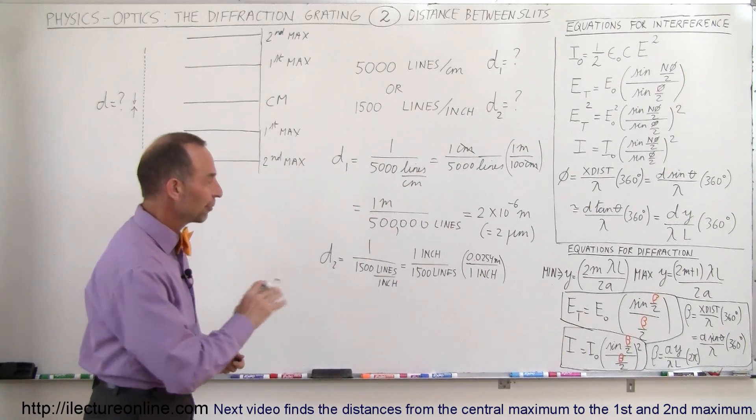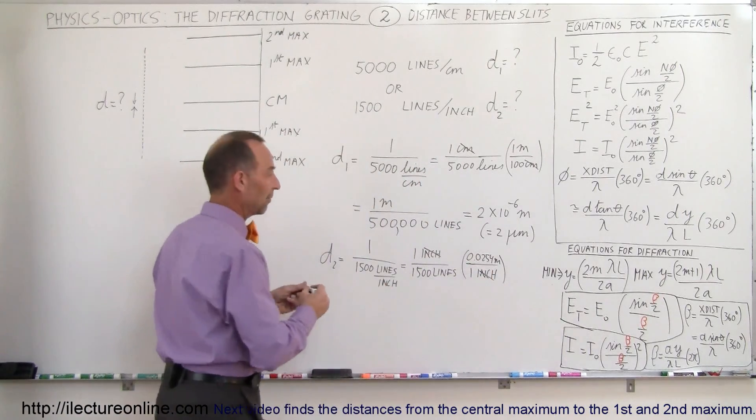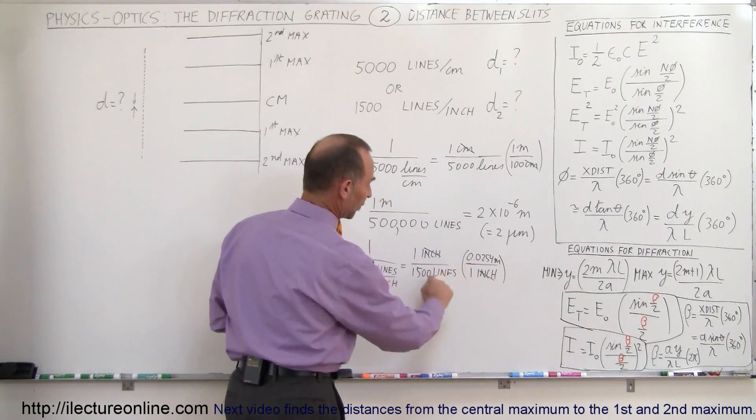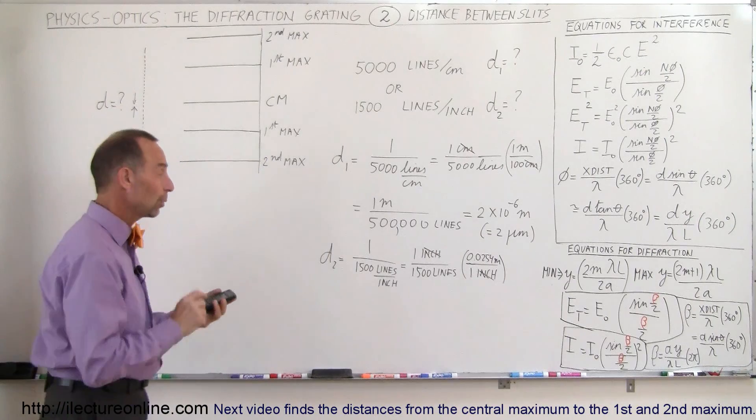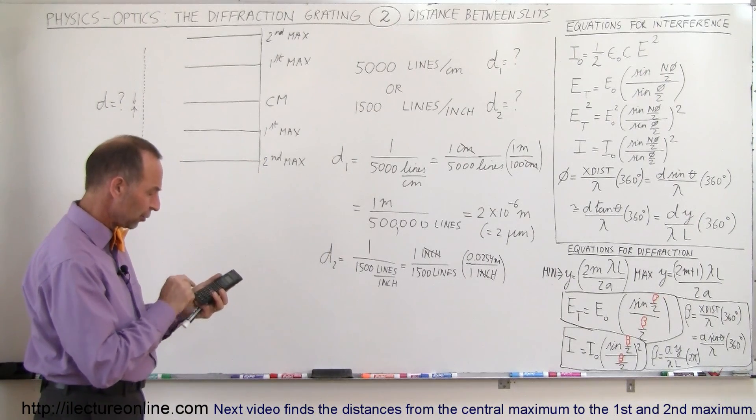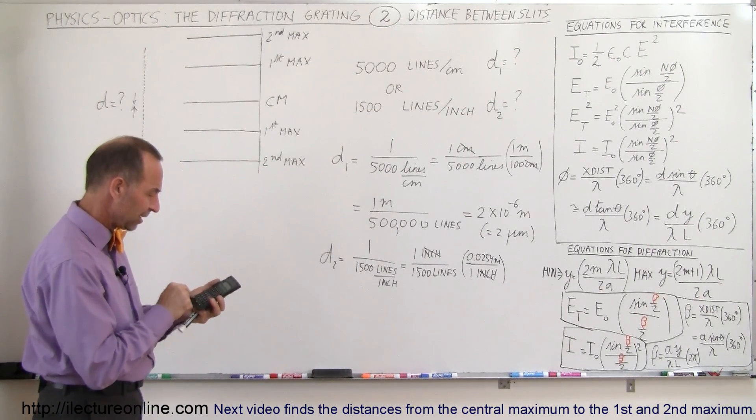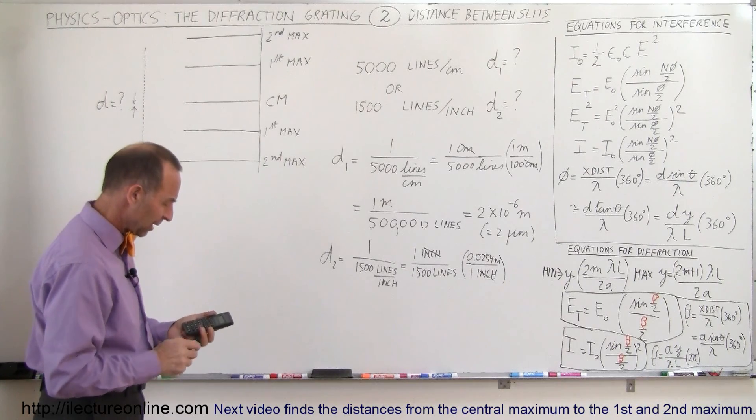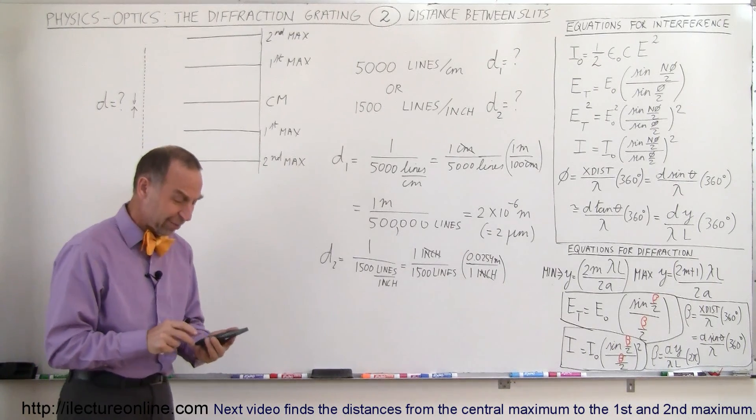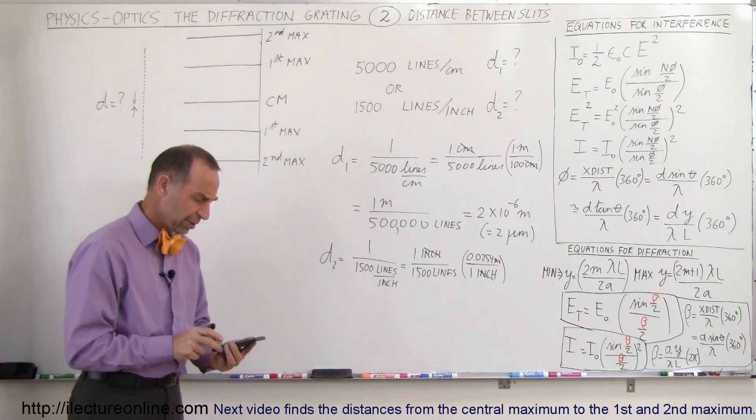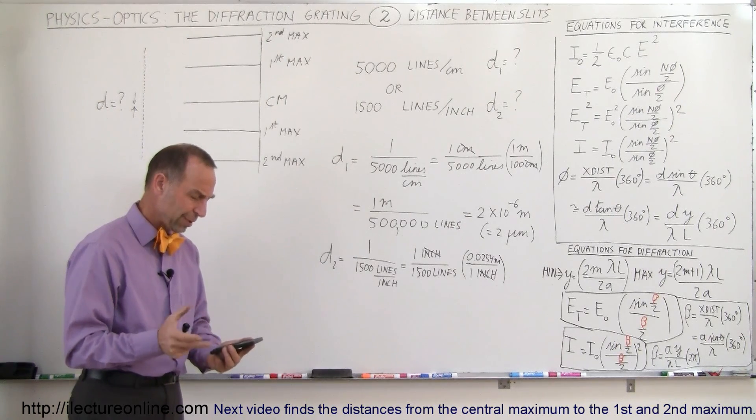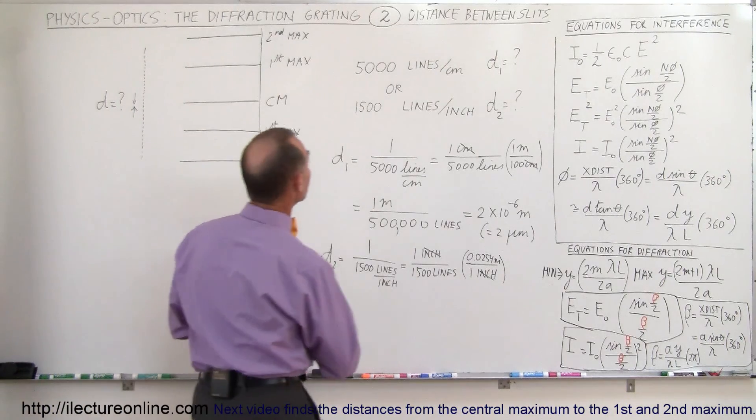Alright, so now we can convert from inches to meters. And now all we have to do is take 0.0254 divided by 1,500. And that gives us the distance in meters between two lines. So we'll go 0.0254 divided by 1,500 equals, and there we get 1.693 times 10 to the minus 5. Or I guess we can go 16.93 times 10 to the minus 6.